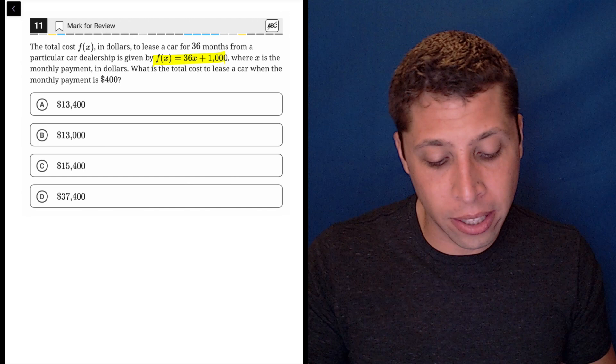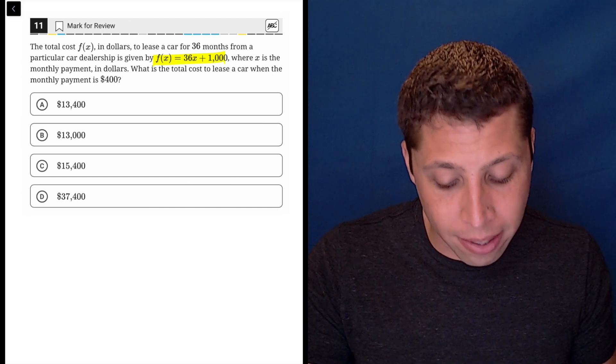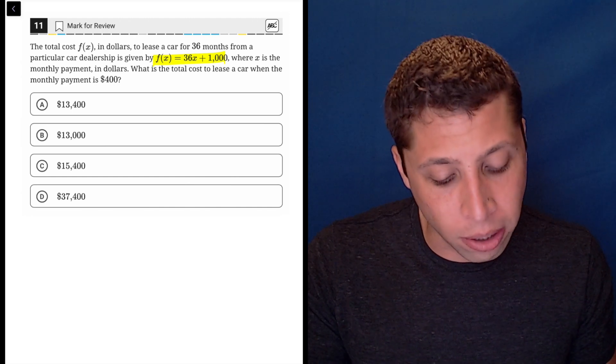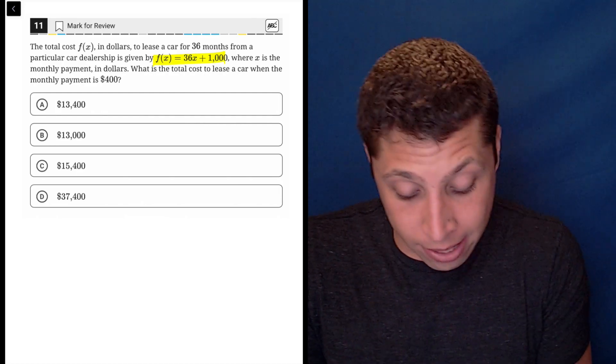So we have the equation here, F of X equals 36X plus 1,000, where X is the monthly payment in dollars. What is the total cost to lease a car when the monthly payment is $400?